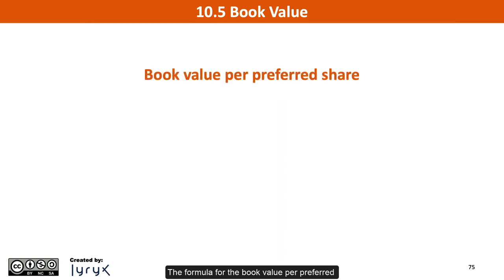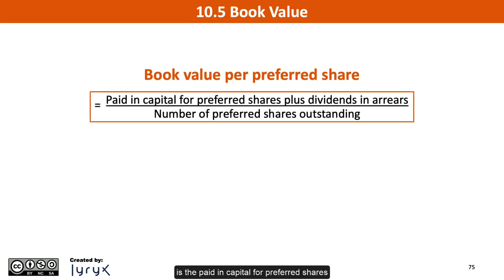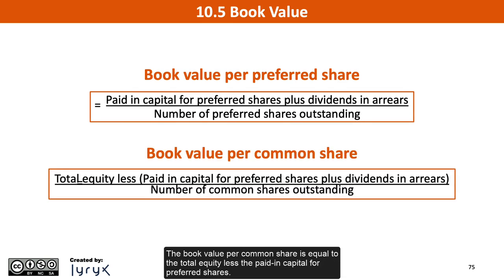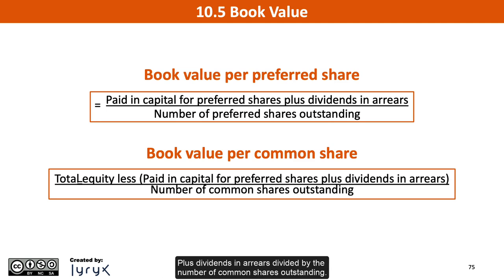The formula for the book value per preferred share is the paid-in capital for preferred shares, plus dividends in arrears, divided by the number of preferred shares outstanding. The book value per common share is equal to the total equity, less the paid-in capital for preferred shares, plus dividends in arrears, divided by the number of common shares outstanding.